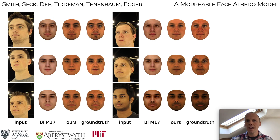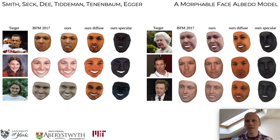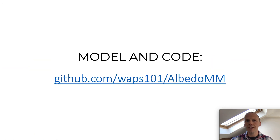We used our captured data to provide ground truth for an albedo estimation benchmark. Using the same fitting pipeline, our model reduces the error in the estimated albedo by nearly 70% compared to using the existing Basel Face model. Fitting to in-the-wild images, we can see that our model meaningfully disentangles shading from diffuse and specular albedo.